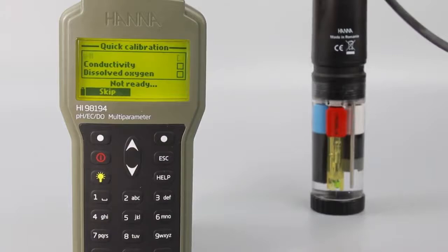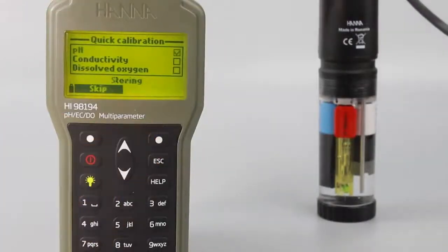You'll calibrate for each sensor in stages. If you want to skip calibration on a specific sensor, just press skip.